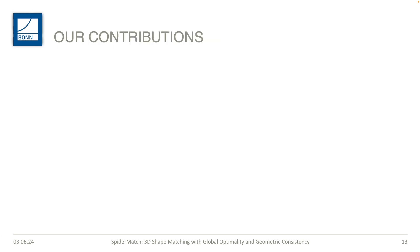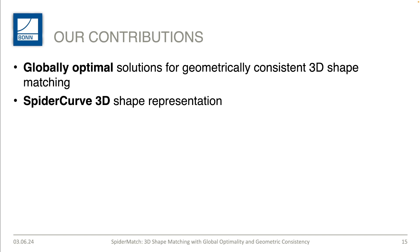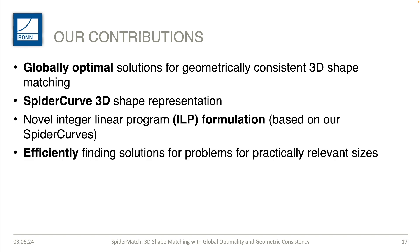In summary, we have identified geometric consistency as a quite important property for 3D shape matching, which is often overlooked but leads to high-quality results. To this day, there does not exist an approach which is initialization-free, enforces geometric consistency as a hard constraint, and scales to practically relevant shape resolutions. This is where our approach closes the gap. We propose a method for globally optimal geometrically consistent 3D shape matching, introduce spider curves as a novel 3D shape representation, formulate a novel integer linear program, and show that it can be solved efficiently.